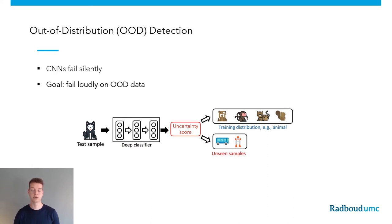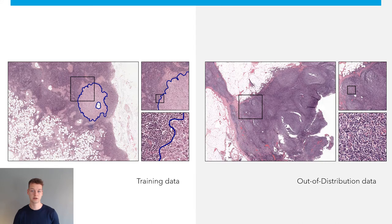A high uncertainty would indicate an out-of-distribution sample, which would require more expert supervision. This is of course also important for the field of digital pathology. Therefore, in this work we consider models trained to detect breast cancer metastasis on lymph node tissue. We would like to see high accuracy values for this task during inference, but also the ability to detect out-of-distribution data — in this case lymph node tissue diagnosed with lymphoma.